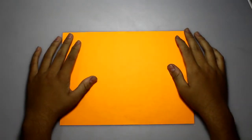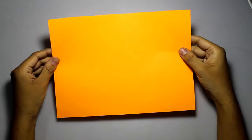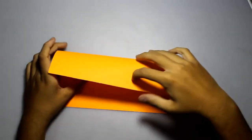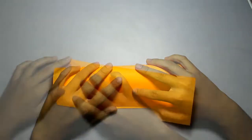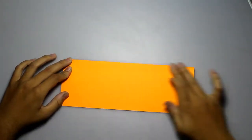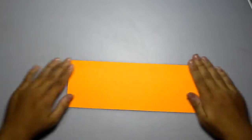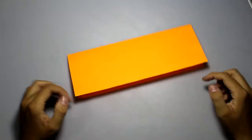To make a paper Concorde, you first need a letter sized paper and you need to fold it in half. Now the corners are perfectly aligned.